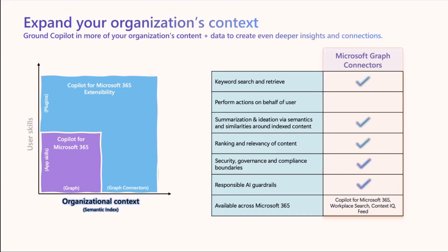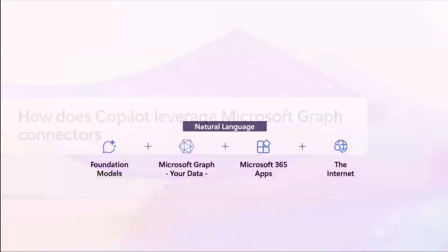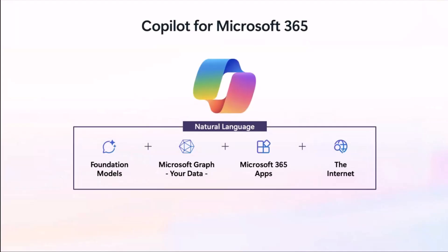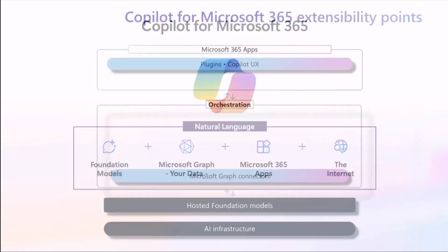What this gives you is more context around your data — going beyond keyword search and retrieval, doing summarization, doing ranking — and you also get all the benefits of responsible AI that Microsoft provides. In a nutshell, we're leveraging the foundational models that are already there so you can do chat completion, summarizations, and artfully grounding that data around Microsoft 365, then having your in-app experiences to create a co-pilot story.